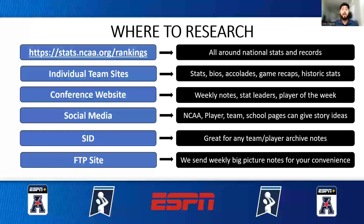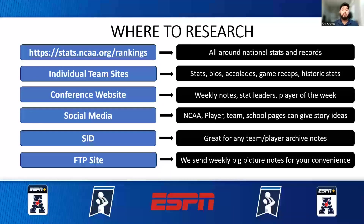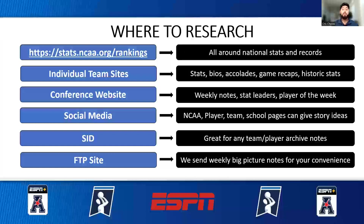First, you have the NCAA stats.org page. That has everything from all-around national stats — your leaders, either team leaders or player leaders. It gives you strength of schedule, attendance records, win streaks, and losing streaks. That website, if you ever want a broader picture when it comes to stats or information on a specific team's active leaders, is definitely the site to go to. That's usually my first site I go to for anything just so I can get some stats read out.